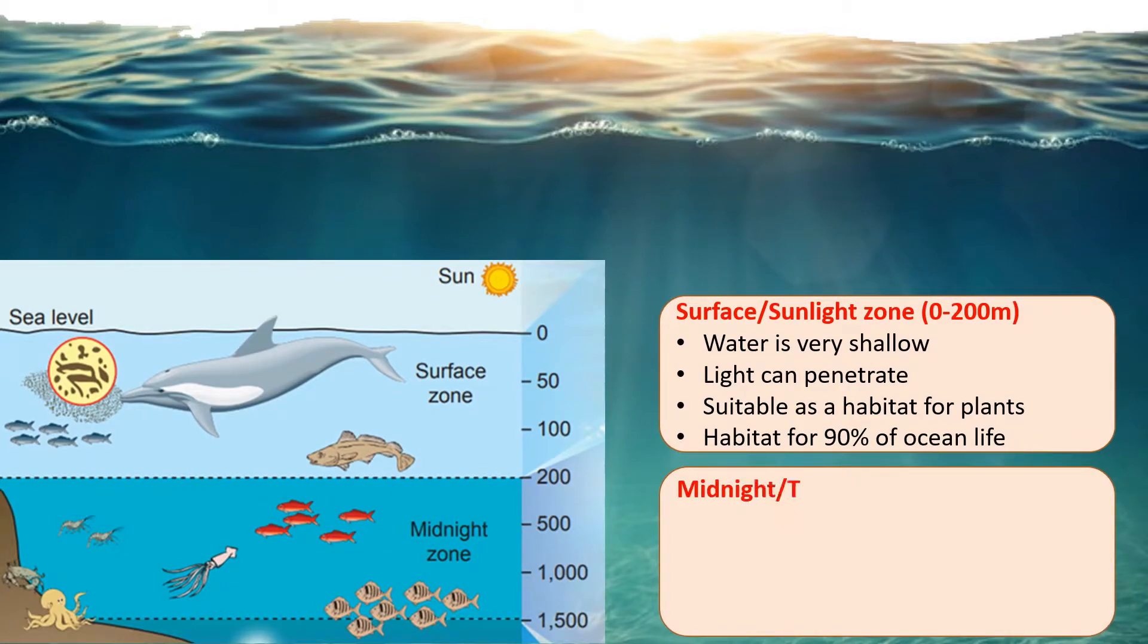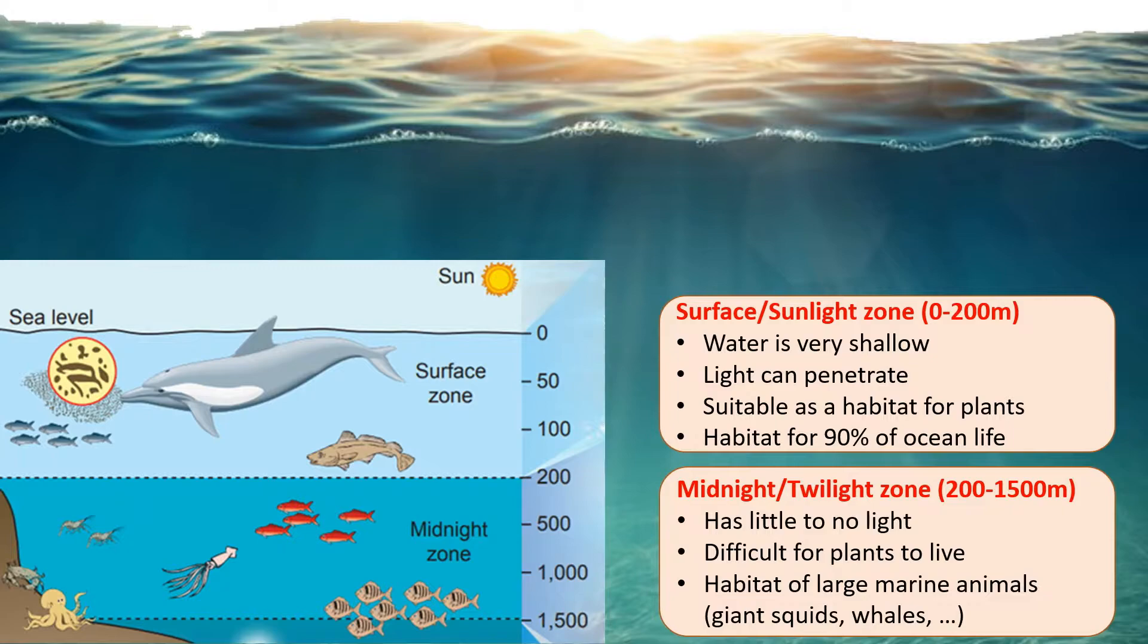As we dive deeper, we will move into the midnight zone or also known as the twilight zone. It ranges from 200 to 1500 meters deep and it has very little light or basically no light. This made it very difficult for plants to survive and without the food source, most of the aquatic organisms choose to live in the surface zone. Only large marine animals such as giant squids or whales may displace their habitat.